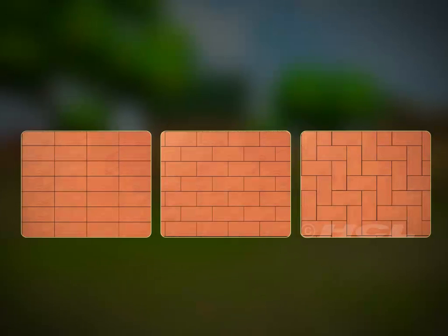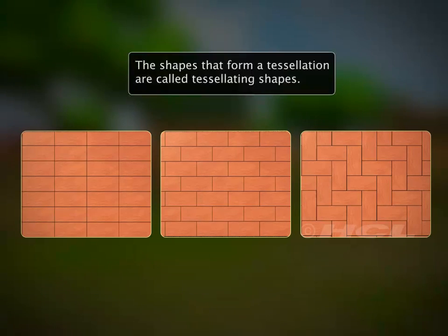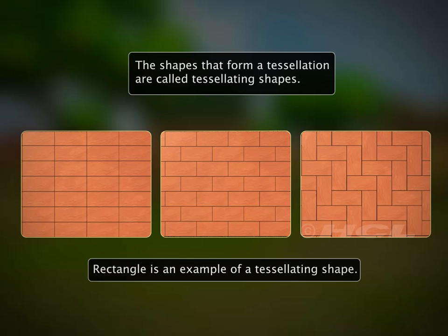So, we can say that rectangular tiles can form tessellations. The shapes that form a tessellation are called tessellating shapes. Rectangle is an example of a tessellating shape.